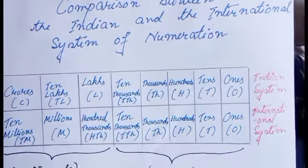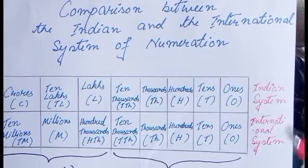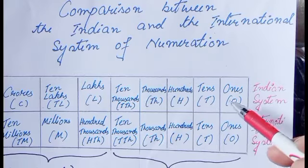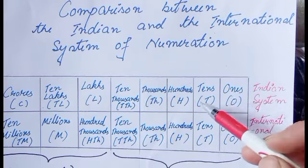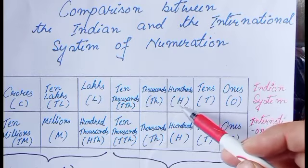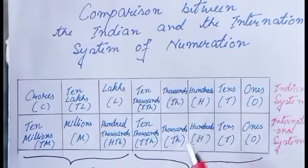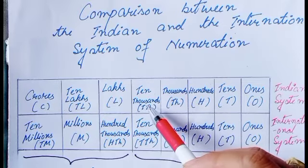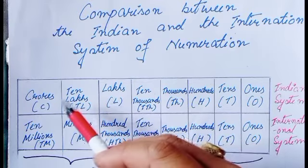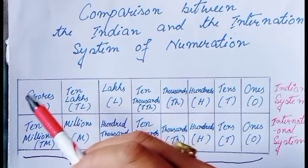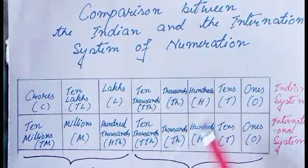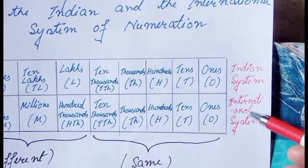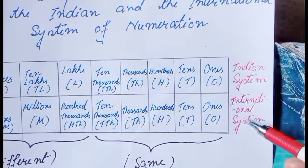The first major difference is in their place value table. So let us check the place value table of each system. In the Indian system, in the ones period we have ones, tens, and hundreds. In the thousands period we have thousands and ten thousands. Then in the lakhs period we have lakhs and ten lakhs, and finally we have crores.